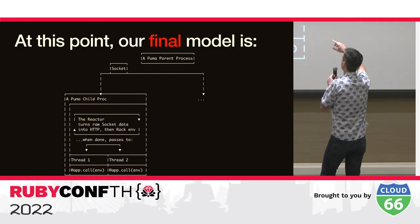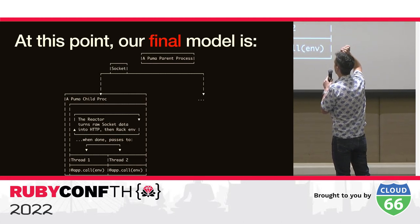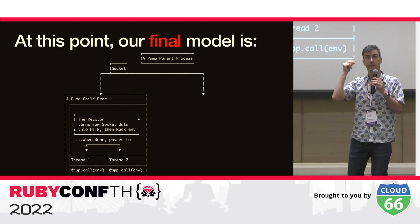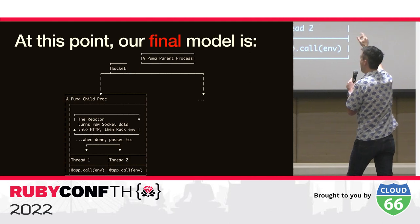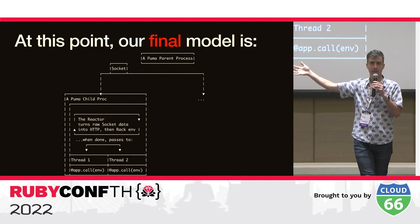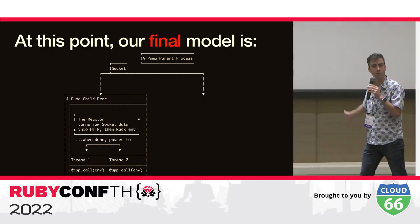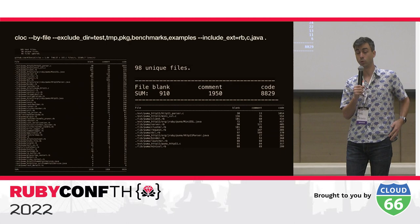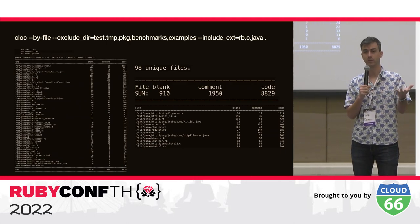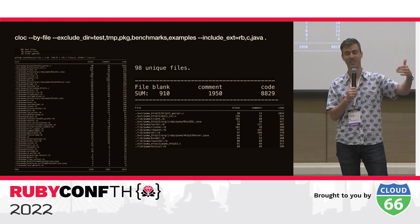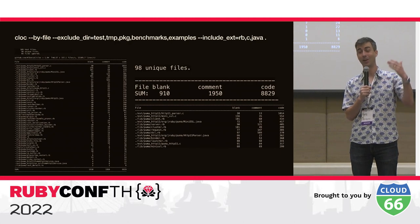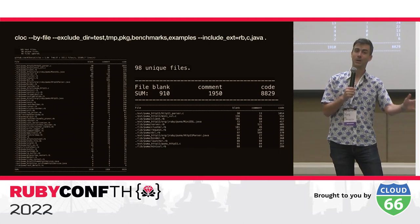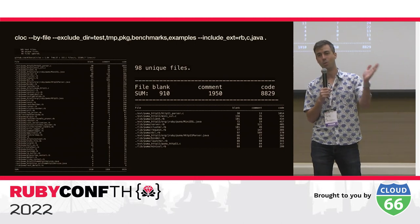This is the final model of Puma running: multiple child processes listening on a port, a reactor in each process buffering raw socket data into a complete Rack environment, which gets passed to one of the threads in the thread pool. When looking at a new project for the first time, I like to use CLOC to count lines of code and figure out the biggest, most important files.